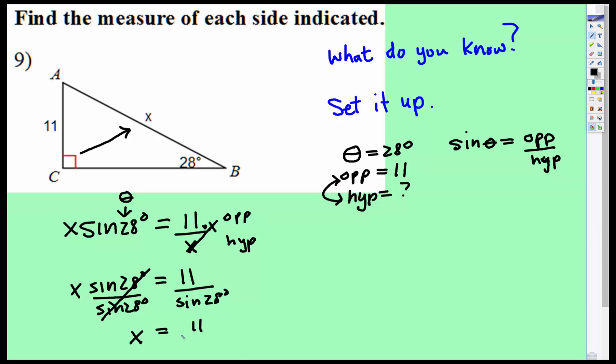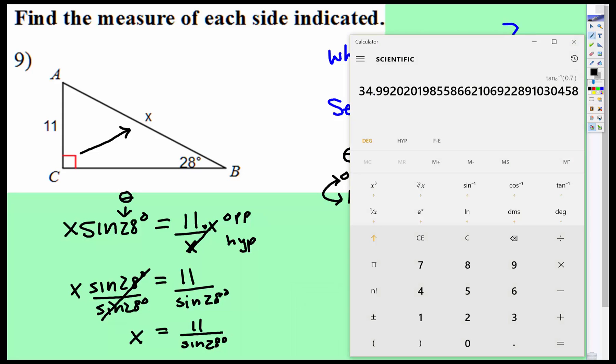x equals 11 over the sine of 28 degrees. That is the first way, and then we're going to type this into a calculator. I think I can type that in the correct way. Okay, so let's see.